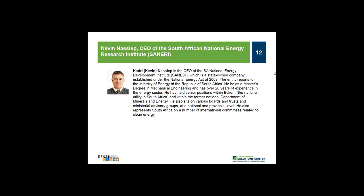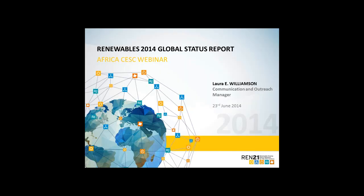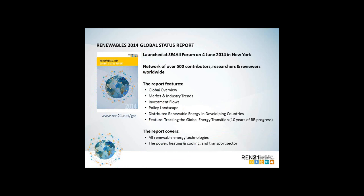Thank you. My name is Laura Williamson and I'm with REN21. I'll give you a brief overview of the current status of renewables in the world today, with specific examples about Africa. REN21 is a multi-stakeholder network cutting across five key stakeholder groups: trade associations, nonprofits, governments, intergovernmental organizations, and research institutes. From these groups, we have about 500 experts on renewable energy who come together to help produce this annual global status report.